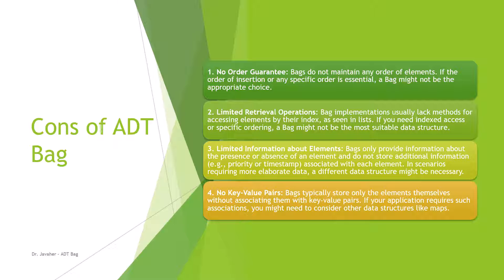Now let's talk about some disadvantages of using ADT-Bag. One important disadvantage is no order guarantee — bags do not maintain any order of elements, so if insertion order or specific ordering is essential, a bag might not be appropriate. Another disadvantage is limited retrieval operations — bag implementations usually lack methods for accessing elements by index. If you need index access or specific ordering, a bag may not be the most suitable data structure. Another disadvantage is limited information about elements — bags only provide information about the presence or absence of an element and do not store additional information such as priority or timestamp.